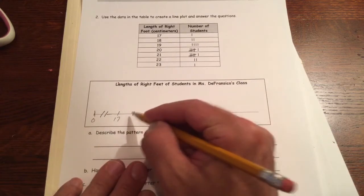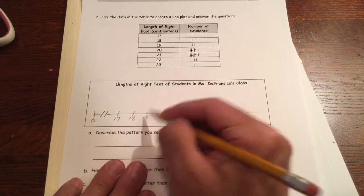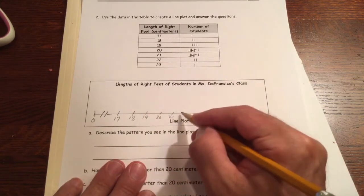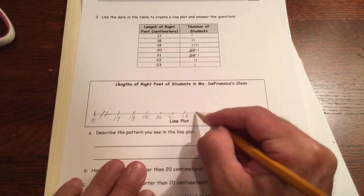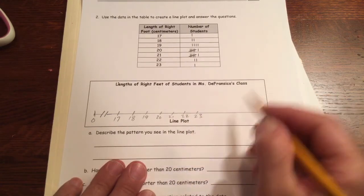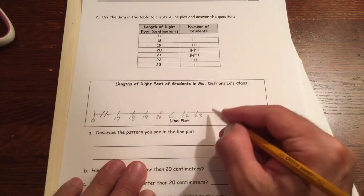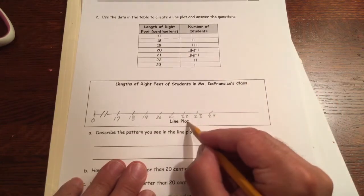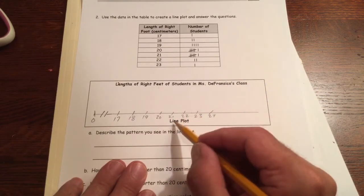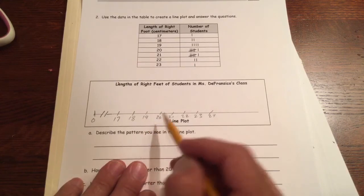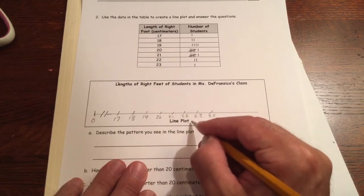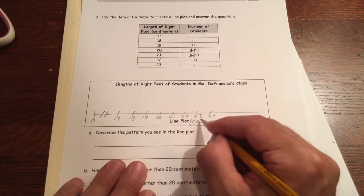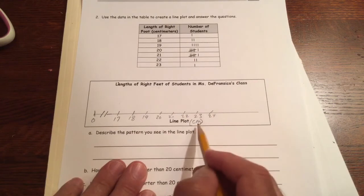And then we have 18, 19, 20, 21, 22, 23 is where we stop. So I don't have to do any more than that. And if I want, I could do 24, why not? Just to show that there's nothing there. And then line plot, these are all in centimeters. Now I could write CM, CM, CM, CM, but I'm just gonna say CM and label the whole line with that. Just that's centimeters.